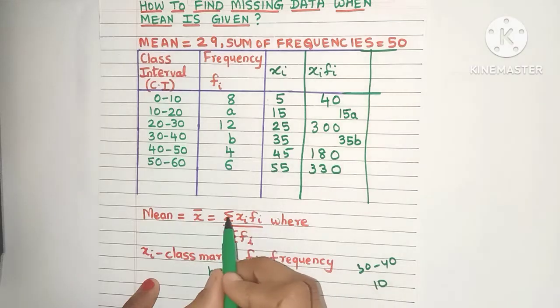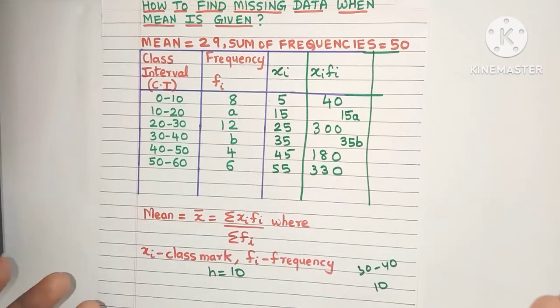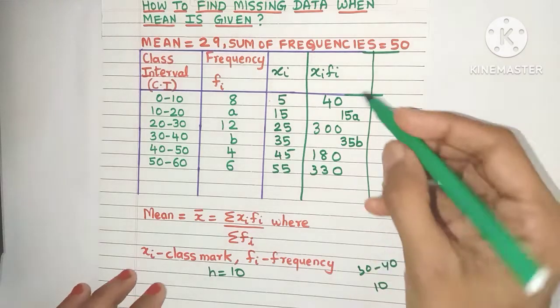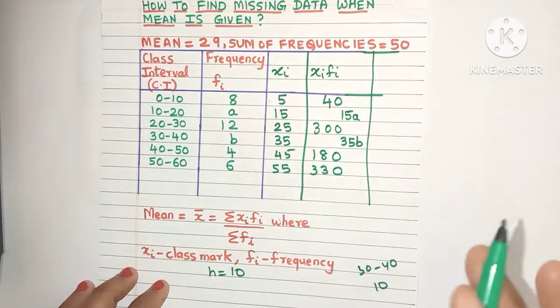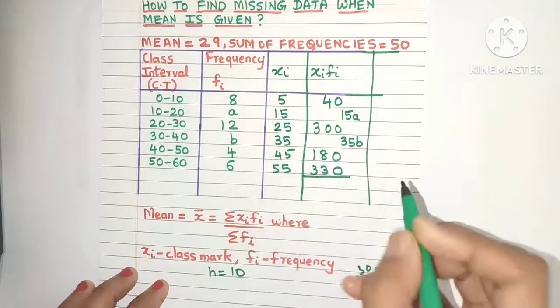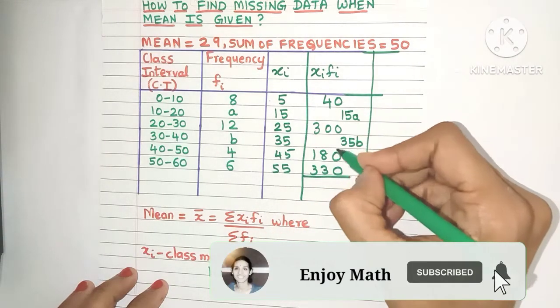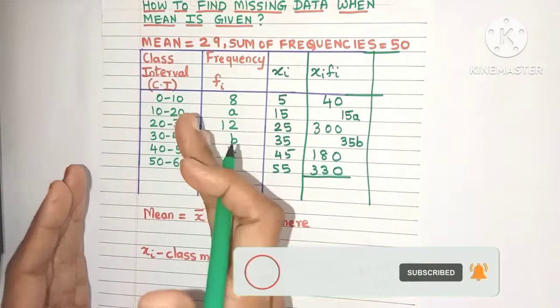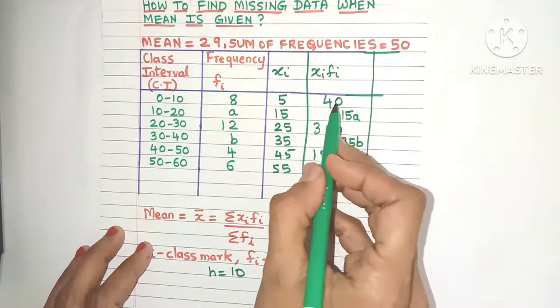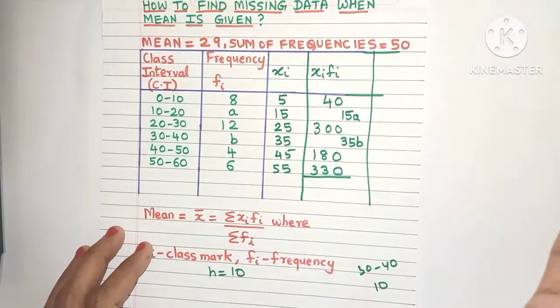Now look at the formula again. You need sigma xi fi. What is sigma? Sigma is the Greek letter for summation. So we need to add all the xi fi values. Because there are variables, first add only the numbers, and that's why we wrote the numbers to one side so you don't confuse and end up adding 40 and 15a.